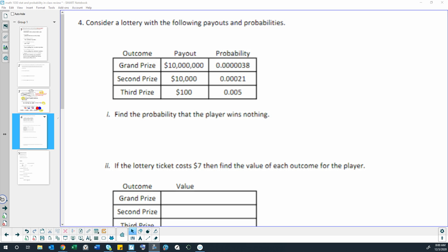Question four on our stats and probability review. Consider a lottery with the following payouts and probabilities.